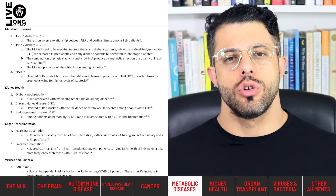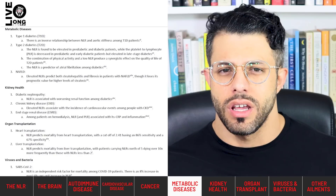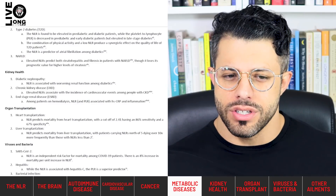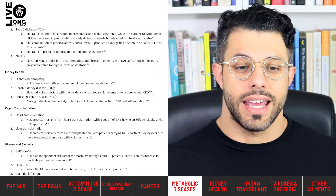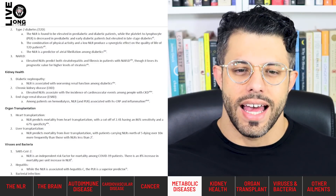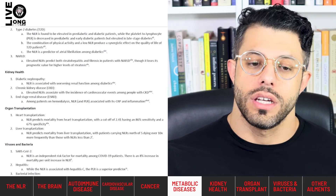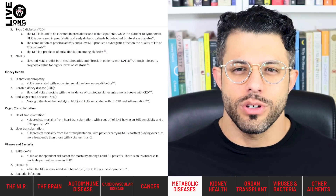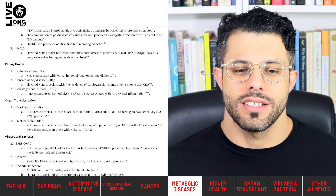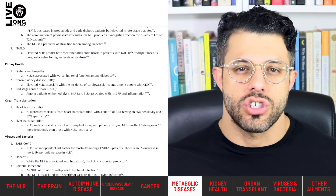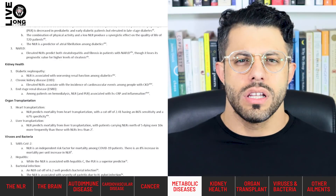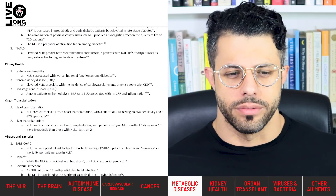In metabolic diseases, there's an association between cardiovascular health in type 1 diabetes and the NLR. The NLR is elevated in pre-diabetic and diabetic patients but not in late-stage diabetes. Physical activity combined with a lower NLR produces a synergistic effect on quality of life in type 2 diabetes patients. In fatty liver disease, elevated NLRs predict steatosis, NASH (inflammation of the liver), and fibrosis — including cirrhosis, the development of scar tissue in the liver.